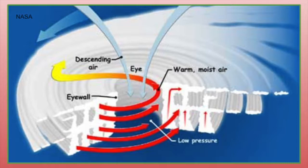As air rises, it begins to cool. The clouds formed begin to spin, pushed by winds created by the air movement. The difference in air pressure and temperature between the inside of the storm and the surrounding air can combine to allow tropical storms to grow into big hurricanes. The warmer the ocean temperature, the more heat and moisture are transferred into the storm, making it bigger.